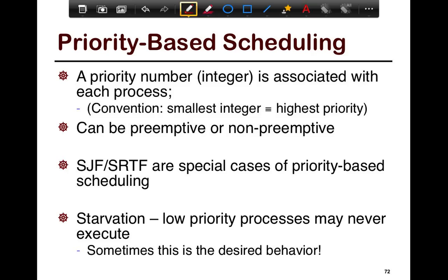The next thing we're going to look at is priority-based scheduling. This is very simple — you associate a number with each process; a smaller number means typically higher priority. In Linux this can be thought of as niceness levels. With every process you create from the shell you can specify a minus-nice parameter — the smaller the nice parameter, the higher the priority. This can again be both preemptive or non-preemptive. Shortest job first and shortest remaining time first can really be thought of as a special case of priority where you're prioritizing based on the length of the task — shorter jobs get higher priority.